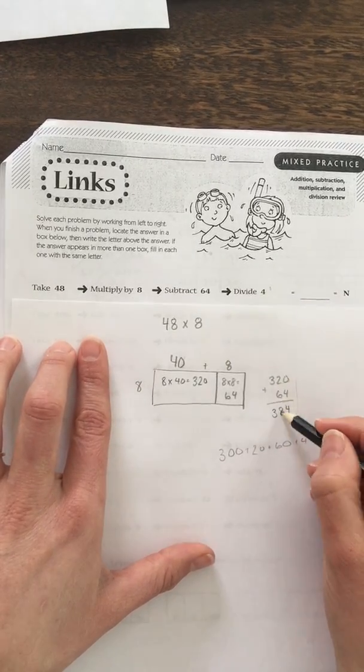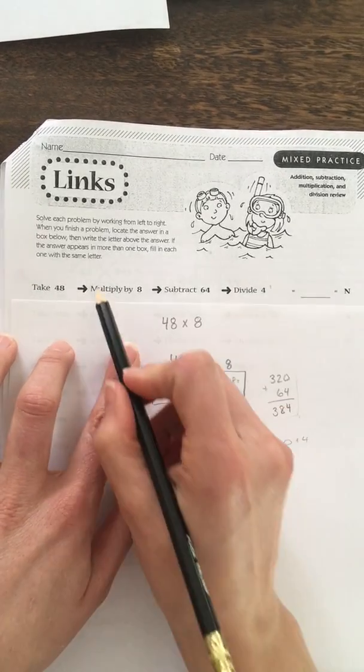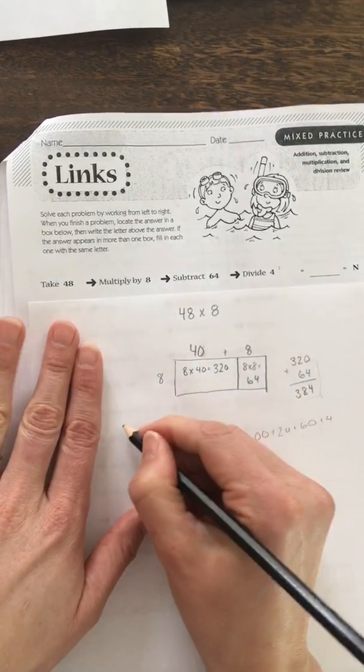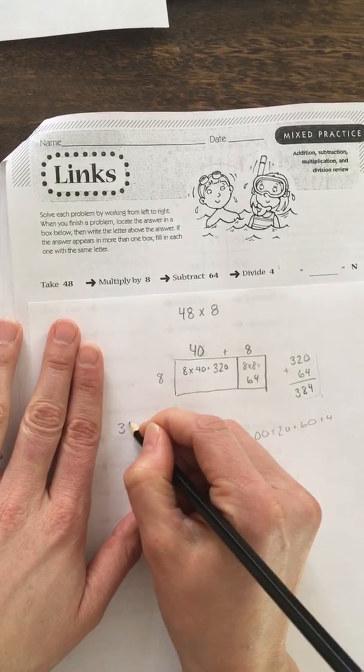So I added 0 plus 4 is 4, 2 plus 6 is 8, and then 300. So now I have 48 multiplied by 8. I need to subtract 64. So 384, again, I'm not going to just mush it onto here. I'll rewrite the problem where I have enough space.